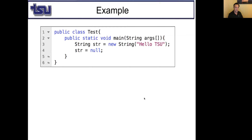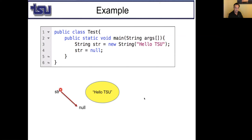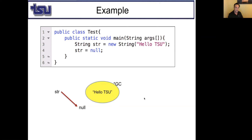Here is our first brief example. We have a String object str. Using the new keyword, we allocated memory space for this object — 'Hello TSU.' Then on the second line, I say str is null. Str does not point here anymore; it points nowhere. At this point, this memory space will be marked for garbage collection. When the object is no longer reachable, it is marked for garbage collection. The object is no longer reachable after line 4.